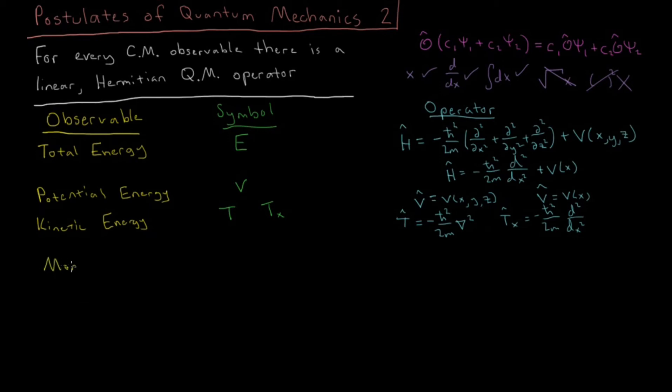Then we have momentum, which we can either denote by a lowercase p for the total momentum in all directions, or a specific component of it, like in the x direction, p_x. Then the operator for p_x specifically would just be minus i h-bar, first derivative with respect to x.